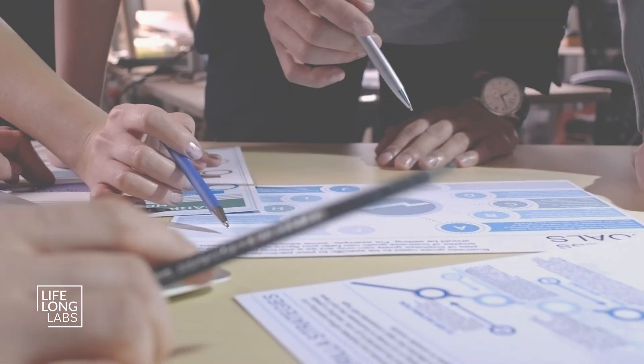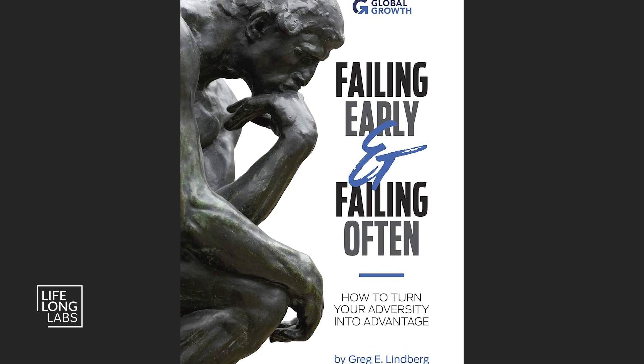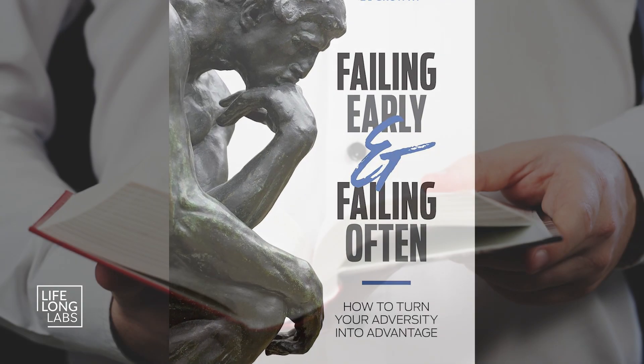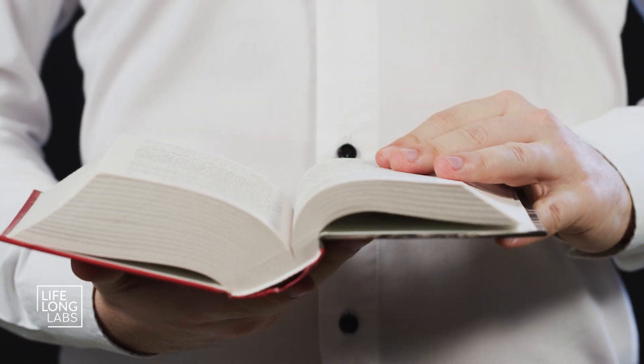Then have a meeting code. In my book 'Failing Early and Failing Often', I publish a meeting code. You can download the meeting code, and it's a very simple meeting code, like 12 points. Print it out and make sure you follow those pointers for your next meeting.